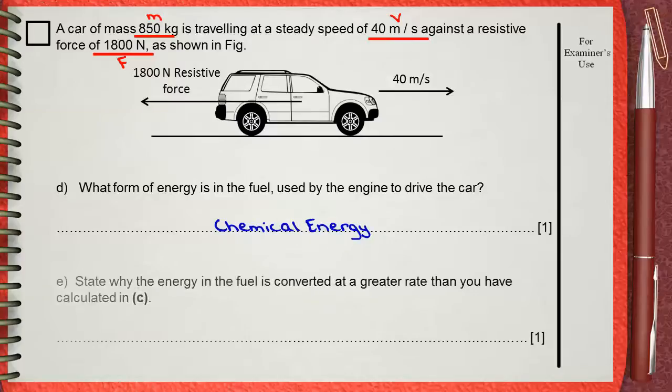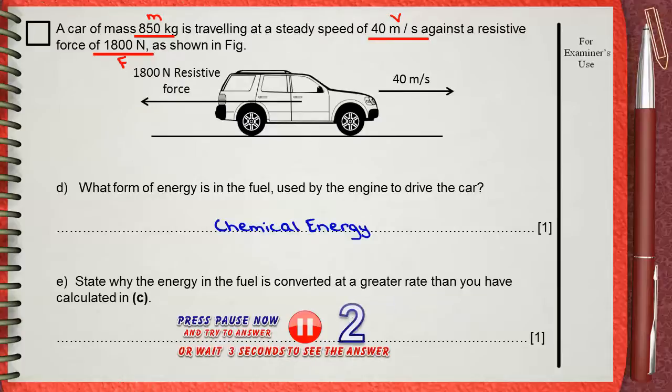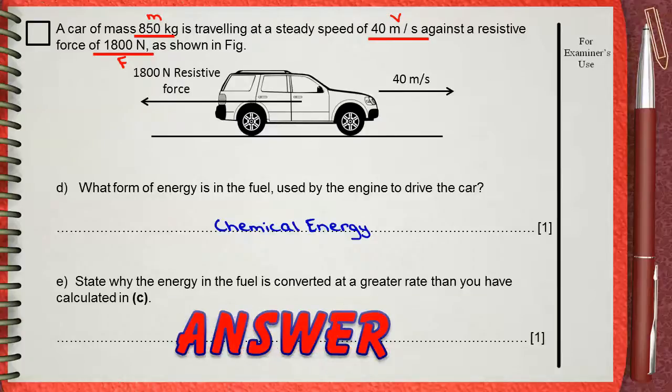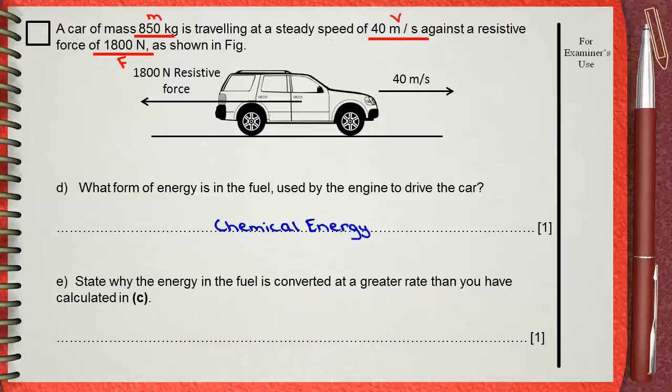E: State why the energy in the fuel is converted at a greater rate than you have calculated in C. In C, we said that the power needed is 72,000 watts. But this is the minimum power. Why? Because the car needs more energy.